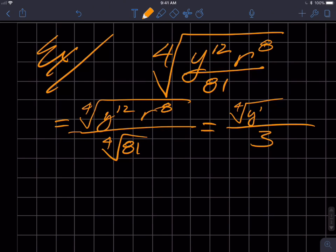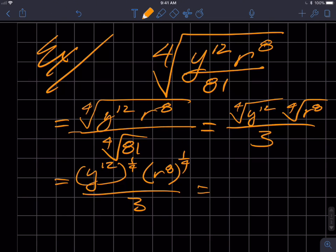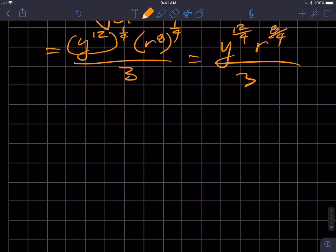I'm going to break this up into y to the 12 and then the fourth root of r to the eighth. I'm going to use one of my rules. This is y to the 1/4 and this is r to the eighth raised to the 1/4, and I have 3 down here. Then I'm going to multiply those two exponents, so this is going to be r to the 8 over 4, and this is all over 3.